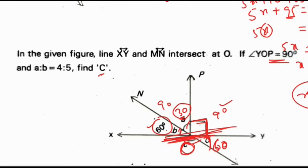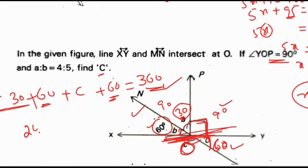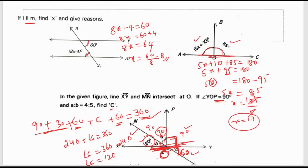Now to find angle C — these are in a full circle, so the complete angle is 360 degrees. Right angle is 90. This angle we got as 30. Then 60, and the vertical opposite angle is also 60. So: 90 plus 30 is 120, plus 60 is 180, plus 60 is 240. 240 plus angle C equals 360. Angle C equals 360 minus 240, which is 120. Therefore, angle C is 120 degrees.